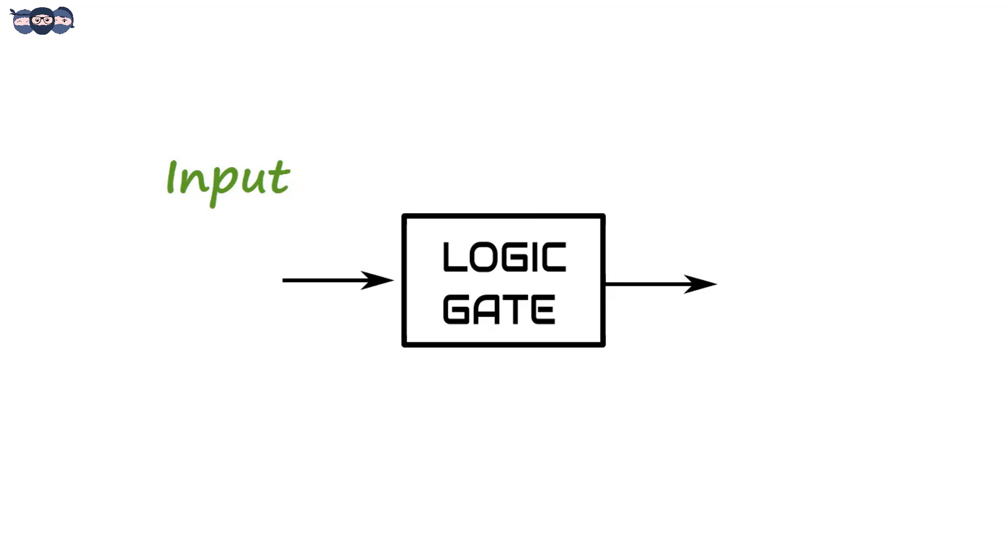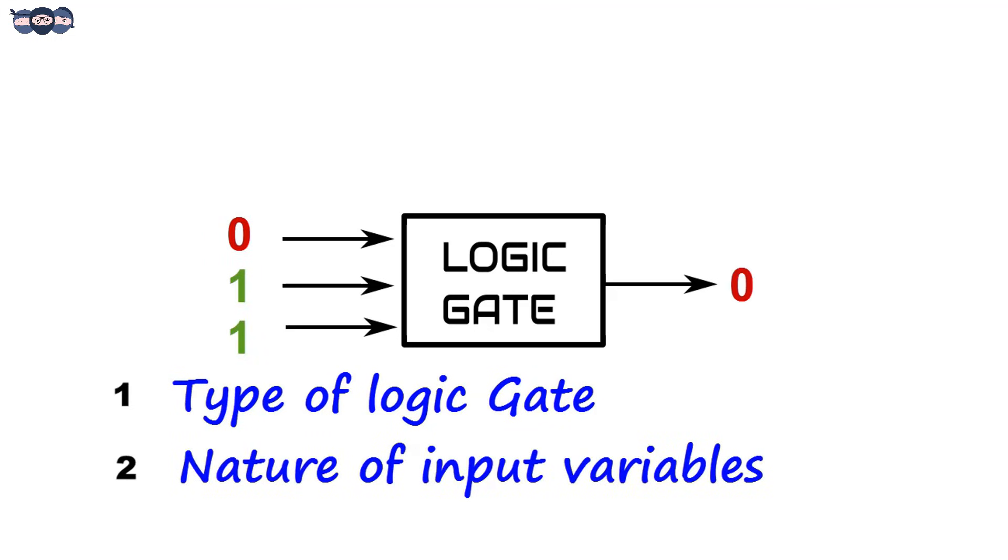The input to logic gate can be single or multiple. Output changes for every input combination and it depends upon two things: the type of logic gate and the nature of input variables.